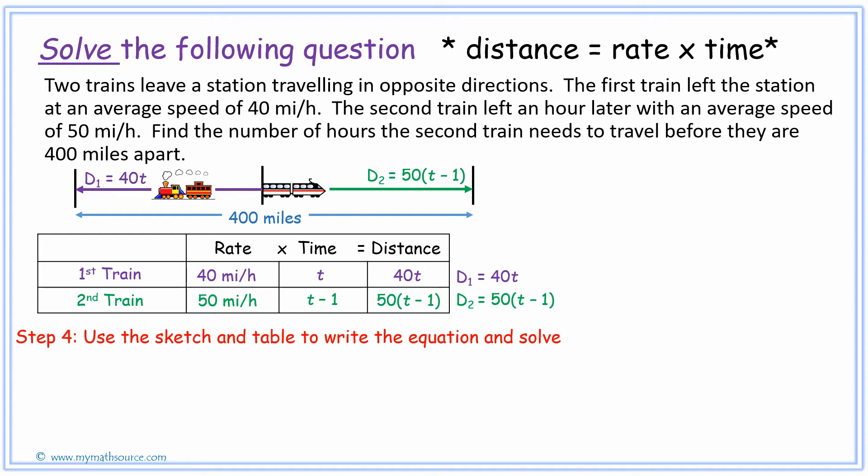That's why we're going to use the sketch in step number four to come up with the equation. When we look at the purple part of the train, that's the first train's distance. If we add that to the second train's distance, we get the total which was already given to us of 400 miles. That's how we set up our equation. It's simply 40t plus the second train's distance, which is 50 times the quantity t subtract 1, and that's all going to equal up to 400.